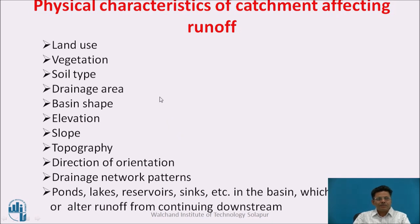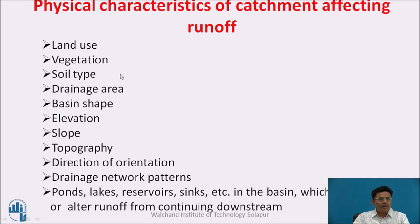The physical characteristics of a catchment affect the shape and pattern of a hydrograph. These properties include: land use, vegetation present in the catchment, type of soil, drainage area of the catchment, shape of the basin, elevation, slope of the watershed, topography, direction and orientation of the watershed, drainage network patterns, and ponds, lakes, and reservoir sinks in the basin — all of which moderate the stream flow.